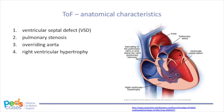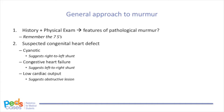Uncommonly, children with Tetralogy of Fallot can present with signs and symptoms of congestive heart failure if there is very minimal outflow obstruction and thus left-to-right shunting across the VSD, leading to pulmonary over-circulation. Symptoms and signs such as respiratory difficulties, difficulty feeding, failure to thrive, tachycardia, tachypnea, and hepatomegaly are suggestive of congestive heart failure. These patients are often referred to as 'pink tets' as they do not experience significant cyanosis. Overall, if you suspect congenital heart disease, you should classify the clinical presentation into one of three categories: cyanotic (suggesting right-to-left shunt), congestive heart failure (suggesting left-to-right shunt), or low cardiac output (suggesting an obstructive lesion). Tetralogy of Fallot fits into the cyanotic category.